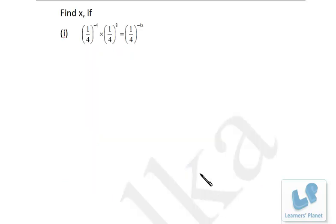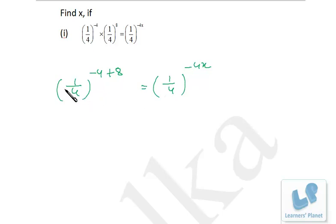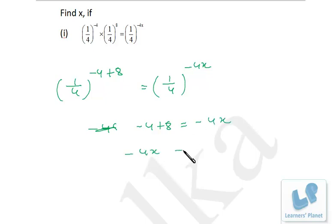In this case we have to find out the value of x. The base on the left hand side and right hand side is the same. So first let's simplify the left hand side: 1/4 raised to minus 4, and this is 8, and both of the 1/4 are multiplied, so the powers will be added. So it's minus 4 plus 8, that is equal to 1/4 raised to minus 4x. Now since the base is same, if base is same then power will be same. So minus 4 plus 8 is equal to minus 4x, which gives minus 4x equals 4, so x equals minus 1.